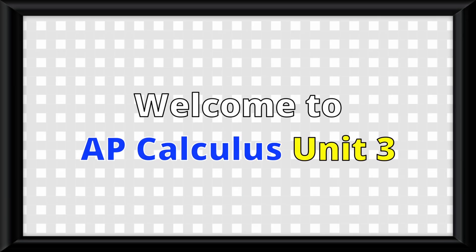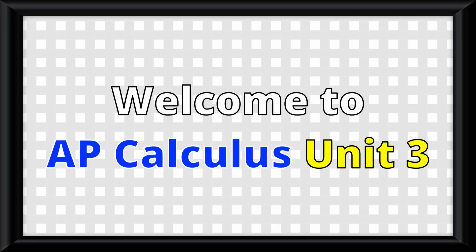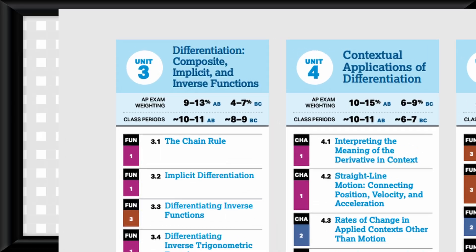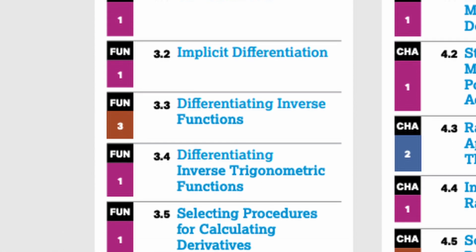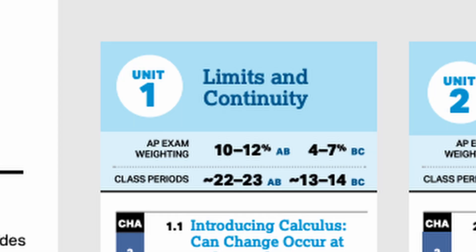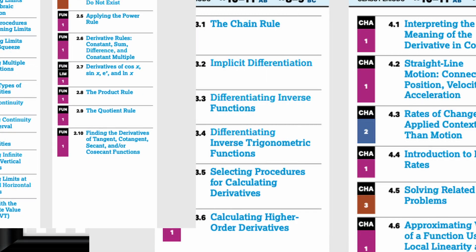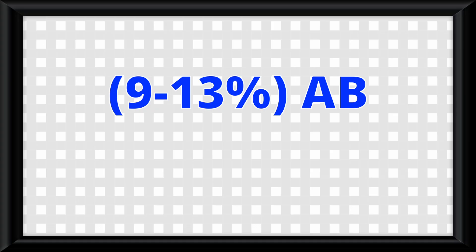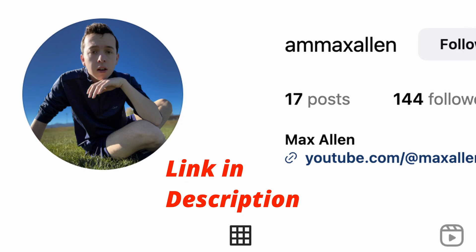Yo guys, Unit 3. I'm running out of ideas for these intros already. This unit simply goes into more things to do with derivatives, and it is only 6 topics. For reference, Unit 1 was 16 topics, so if you can't tell, this is huge. This unit is worth 9-13% on the AB exam and 4-7% on the BC exam. I don't really know, follow my Instagram, let's go already.